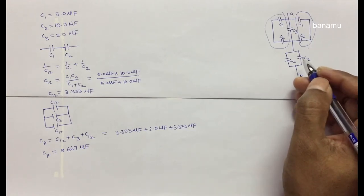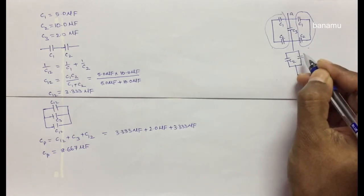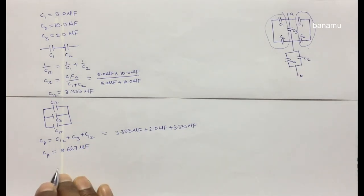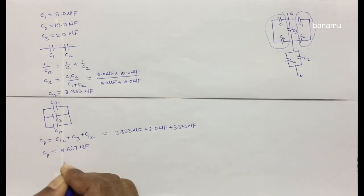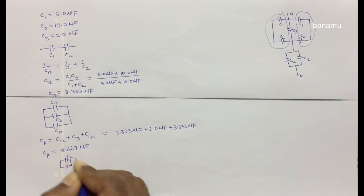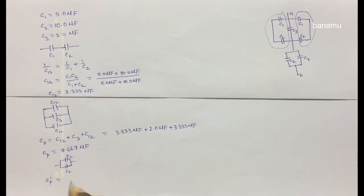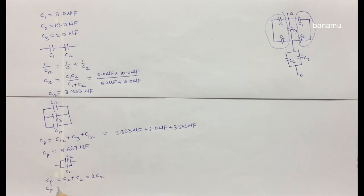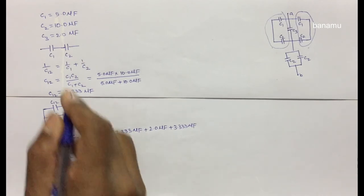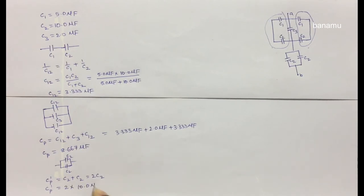Now consider the lower part of the circuit. There are two C2 capacitors connected in parallel to each other. The equivalent capacitance Cp' is equal to C2 + C2, that is 2·C2. Cp' = 2 × 10 microfarad = 20 microfarad.